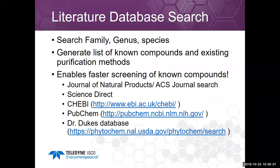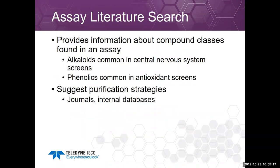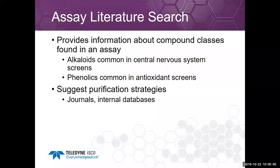Assay literature search provides information about compound classes found in an assay. For example, alkaloids are very common in central nervous system screens, though not everything that shows up will be an alkaloid. Phenolics are also common in antioxidant biological screenings, but not everything that shows up as an antioxidant will necessarily be phenolic. So these are general guidelines for purification strategies drawn from journal literature. If you're working on a muscarinic assay, search for 'muscarinic' in journals to see what compound classes tend to show activity.